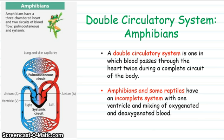Now we move on to double circulatory systems — 'double' meaning when the blood completes one full circuit of the body it passes through the heart twice. Amphibians and reptiles generally have an incomplete system with a single ventricle, so there's mixing of the oxygenated and deoxygenated blood.